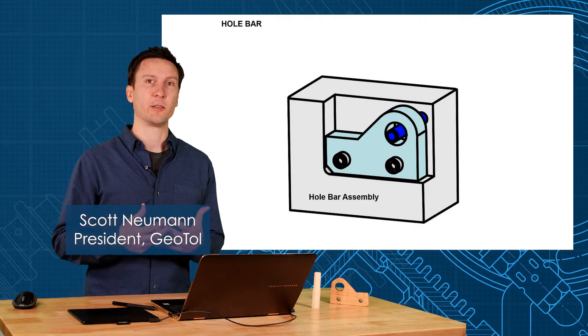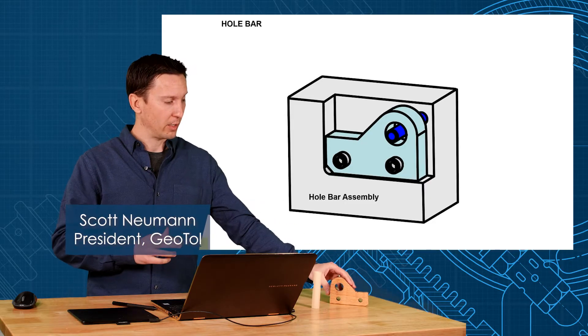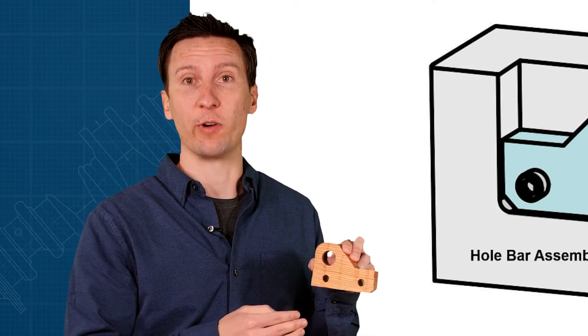Alright, we've been through position tolerancing, the modifiers, and now we're going to take you all the way back to the beginning on the hole bar again. Now we're going to talk about qualifying the datum features and introduction to profile tolerancing.